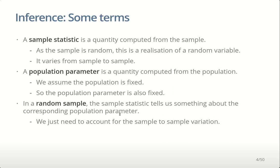For example, the average age in your sample corresponds to the average age in the population. Your prevalence of disease in your sample corresponds to the prevalence of disease in the population. We're going to assume the population is fixed, at least at the time we took our sample, and therefore the population parameter — the summary of that population — is also fixed.